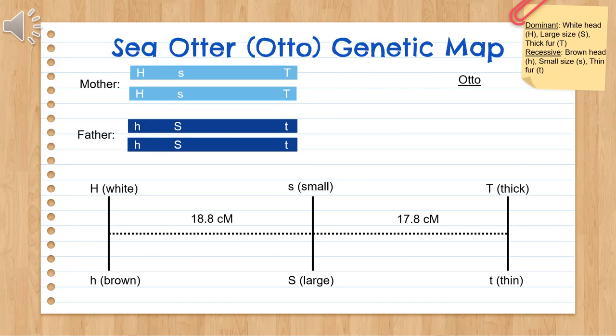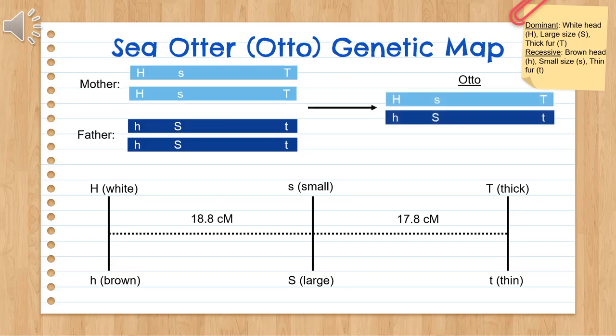To simplify things, we'll be looking at one otter named Otto. Otto's parents are purebreeding homozygous for opposite alleles on their chromosomes, and each parent will be passing on one of their chromosomes to Otto. This causes Otto to be heterozygous for all three alleles: H, s, T on one chromosome and h, S, t on the other. We can now make a genetic map of Otto's loci with the inherited alleles from his parents — his mother's alleles on top and his father's alleles at the bottom. The coefficient of coincidence, or c, for the genetic map is equal to 0.92.